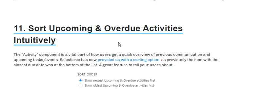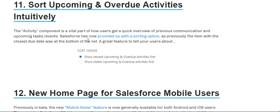The next feature shows upcoming activities intuitively. The activity timeline on an account is a vital part of how users get a quick view of previous communications.